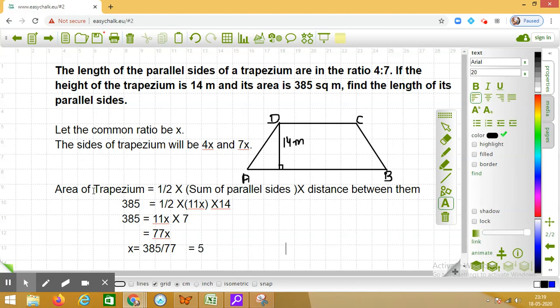So now x is 5, that means the parallel sides of the trapezium will be 4x, which is 20 meters, and the second side is 7x. So 7x means 7 into 5, 35 meters.